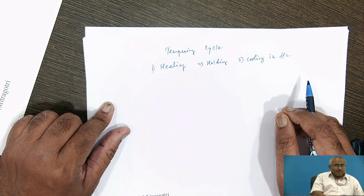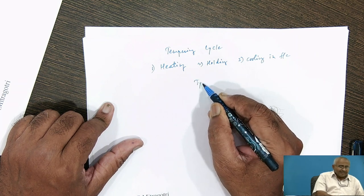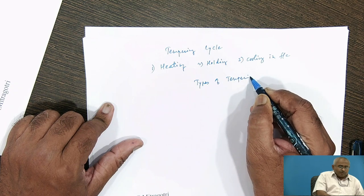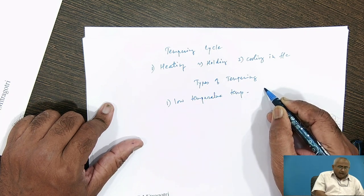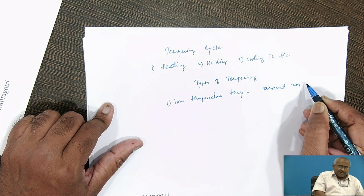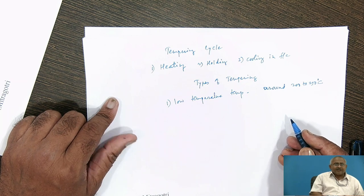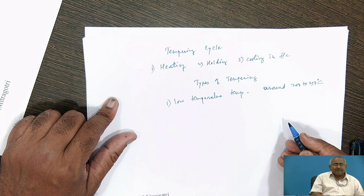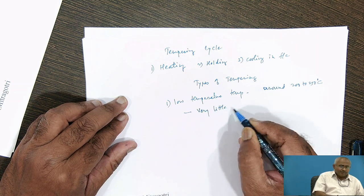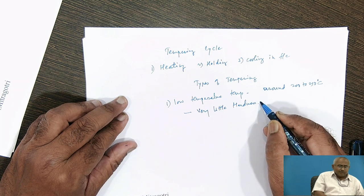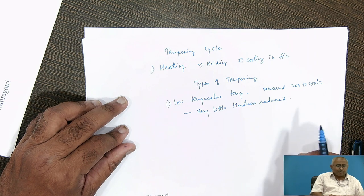Depending upon the temperature of heating, we can classify tempering treatment into three types. The first is low temperature tempering, which is carried out by heating the steel to only 200 to 250 degrees Celsius, holding it at that temperature for a sufficient length of time, and then cooling. By doing this, we reduce hardness only a very little, very little strength is reduced, toughness improvement is very little, and stress removal or stress relief is around 40 to 50 percent.